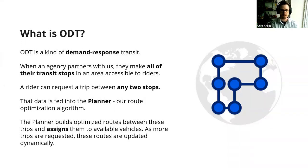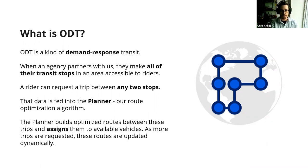ODT is a kind of demand-response transit where riders access a map of a service area and request a trip between any of the transit stops made available by the customer. The key difference from fixed route is that from any stop in the service area, you can access any other stop. Rider requests are fed into our route optimization algorithm — called the planner — which builds optimized pathways between trips and figures out which vehicles are best equipped to handle them, continually readjusting its best plan as more trips come in over the course of the day.